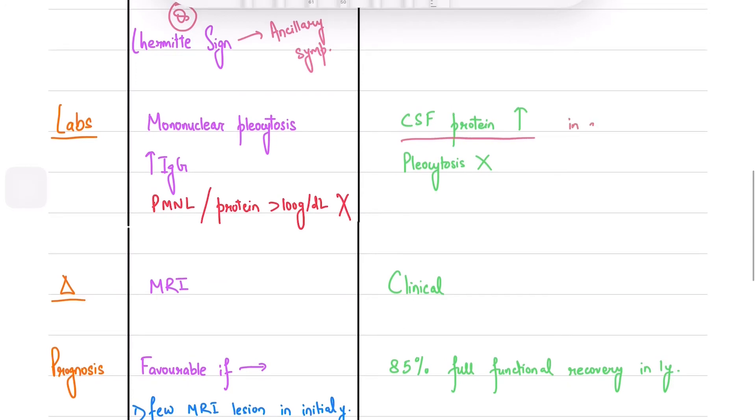Moving on to the lab investigations. CSF protein will be elevated after 48 hours of onset of symptoms in GBS but the lymphocytes will be normal. Sustained pleocytosis suggests a different diagnosis. A mononuclear pleocytosis will be seen in MS with increased IgG. PMNL or protein concentration above 100g per deciliter should point towards a different diagnosis.